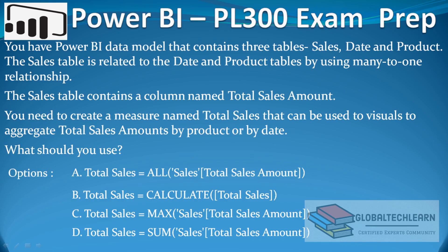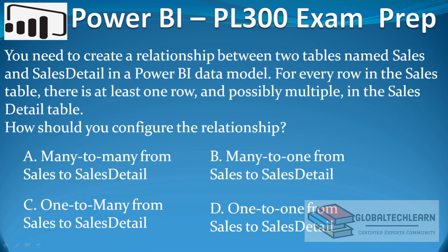Hello friends, welcome to Global Tech Learn. In today's video we will learn Power BI data modeling related questions asked in the Power BI exam. The question is: you have a Power BI data model that contains three tables — Sales, Date, and Product — where the Sales table has a many-to-one relationship with both the Date and Product tables. The Sales table contains one numeric column called Total Sales Amount. Before starting, let's see the data model in Power BI.